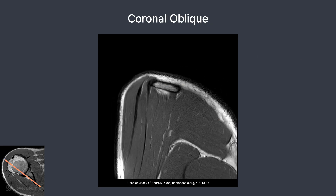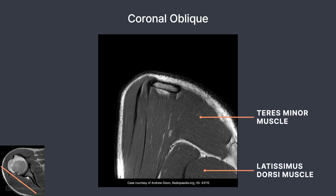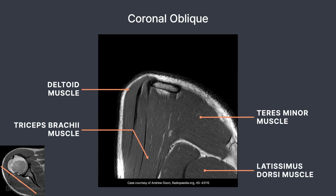On the last slice, muscles include the teres minor, latissimus dorsi, deltoid, and the triceps brachii. Let's move on to the axial plane of imaging.